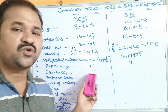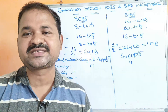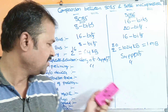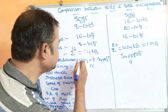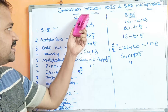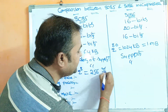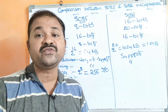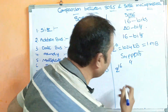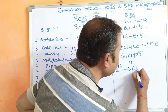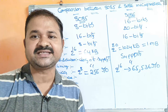The next characteristic is I/O devices — how many I/O devices each processor can access, such as keyboard, scanner, monitor, printer, mouse, and joystick. The number of I/O devices depends on the data bus. For 8085, the data bus is 8 bits, so it can access up to 2^8, which is 256, I/O devices. For 8086, the data bus is 16 bits, so it can access up to 2^16, which is 65,536, I/O devices.